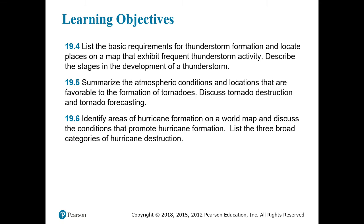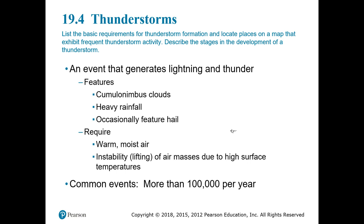We'll start with thunderstorms, which is just defined as an event that has thunder and lightning. These are associated with our cumulonimbus clouds, typically associated with cold fronts and heavy rainfall. They are also fast events because cold fronts typically move rather quickly. Occasionally, there'll be hail associated with these events.